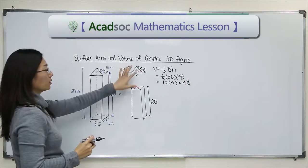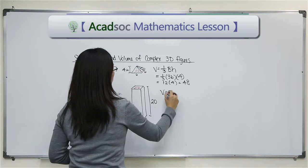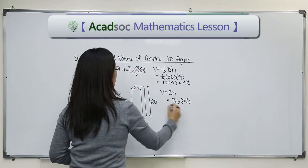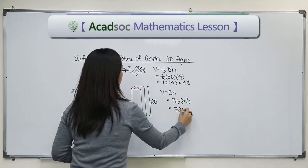And then the volume of this prism would be V equals BH. The area of the base being 36 times the height of 20, and that would be 720.